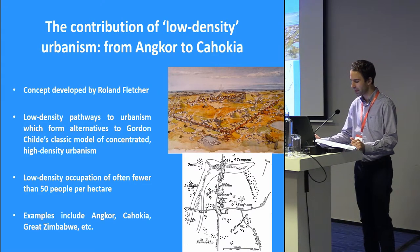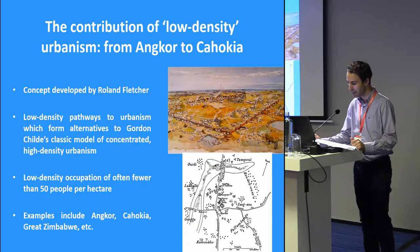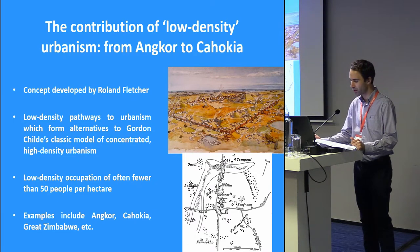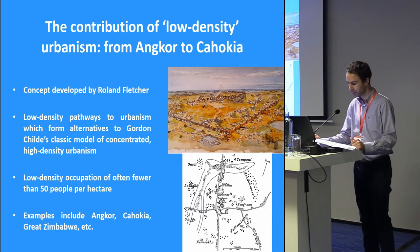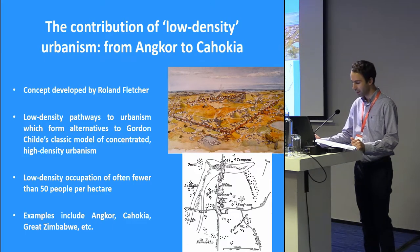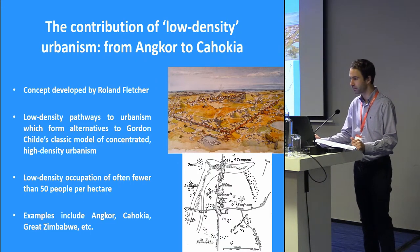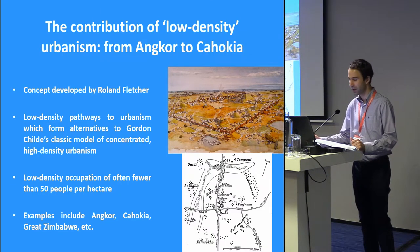In contrast to these densely occupied settlements, throughout history, many urban sites all around the world have been characterized by large areas and manifold functions, but also by low-density occupation of often fewer than 15 inhabitants per hectare. Examples include Angkor in Cambodia, Cahokia in the American Midwest, Great Zimbabwe in Africa, some Mesoamerican cities such as the Maya centers, the so-called African giant villages of the Igbo in Nigeria, or even the 4th millennium BC Tripilia megasites in Ukraine. These places are clearly very different from Childe's high-density norm and deserve consideration in their own terms.